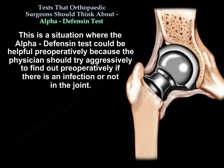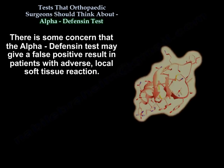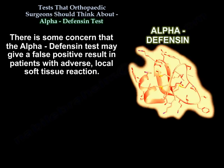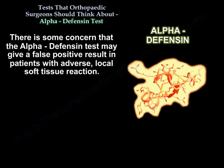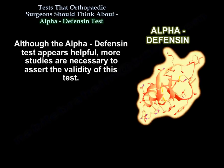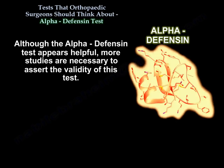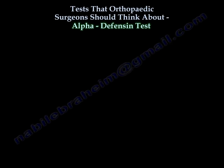This is a situation where the Alpha-Defensin test could be helpful preoperatively, because the physician should try aggressively to find out preoperatively if there is an infection in the hip joint. There is some concern that the Alpha-Defensin test may give false positives in patients with adverse local soft tissue reaction. Although the test appears helpful, more studies are necessary to assert the validity of this test. Thank you very much, I hope that was helpful.